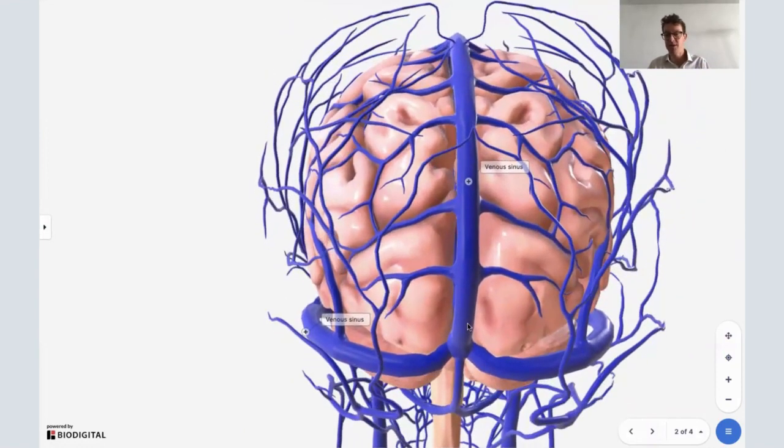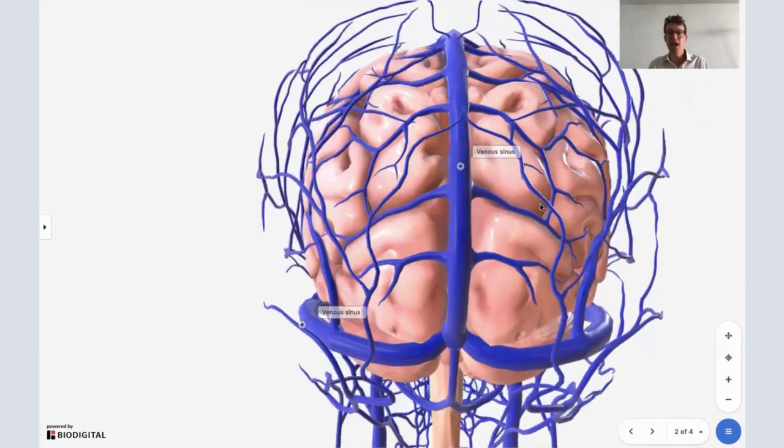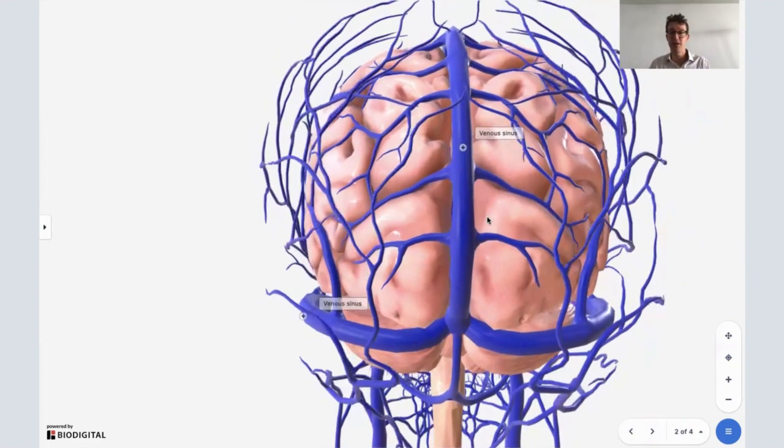So this is the back of the brain. This is superior sagittal sinus, and this is the transverse sinus. And they're these big vein-like structures that take blood back from the brain to the heart so that the heart can then send it to the lungs, oxygenate the blood, and then send it back out to the body via the arterial system.